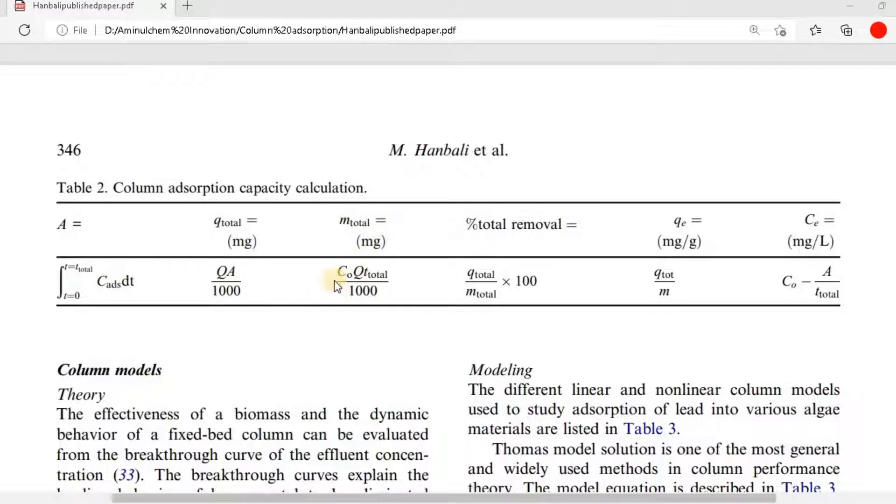And M total equal to C0 Qt total divided by 1000, and percent total removal equal to Qt divided by M total into 100.